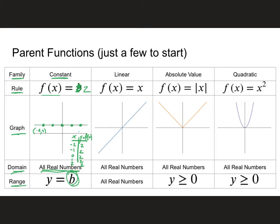Let's take a look at the linear equation. The very basic function is f of x equals x. If you think back to algebra one, this would be an equation with a slope of one and a y-intercept of zero. Let's think about it as a table of values, going from negative two to positive two. Since f of x equals x, the y value is always the same as the x value: negative two, negative two; negative one, negative one; zero, zero; one, one; two, two. And we've created our graph.